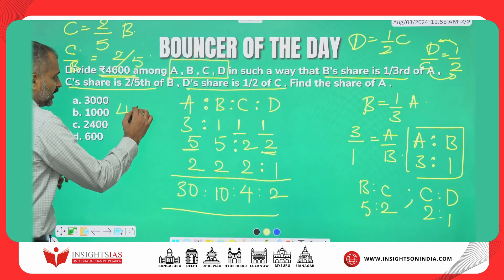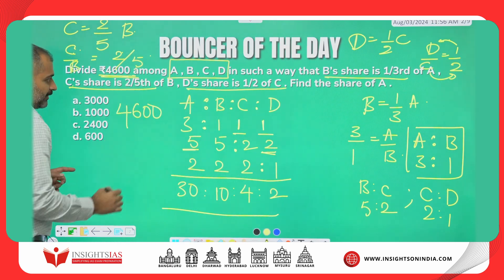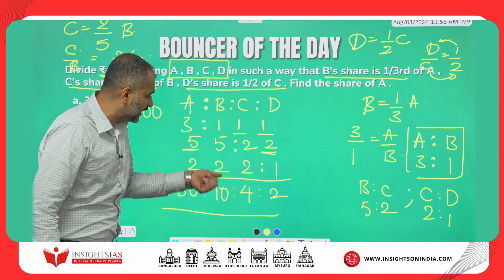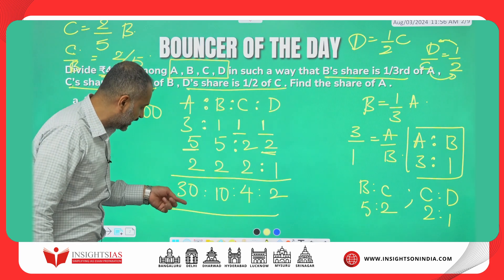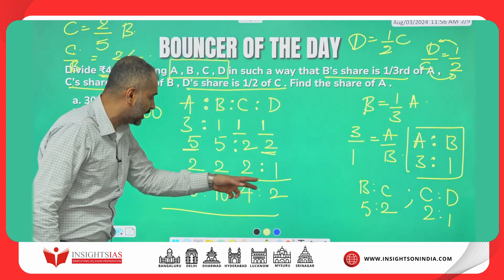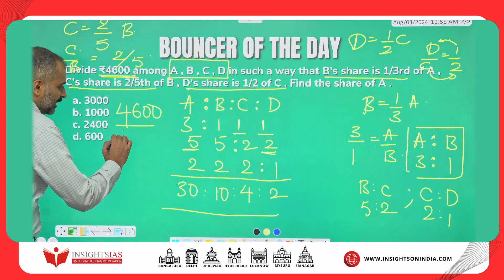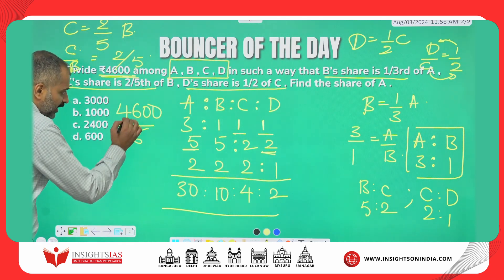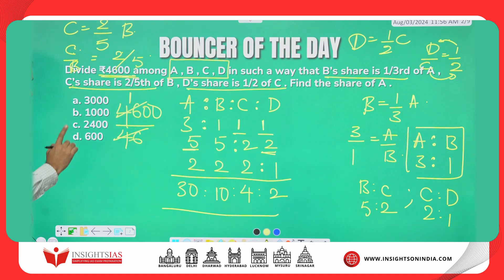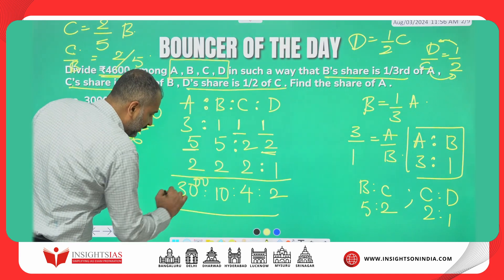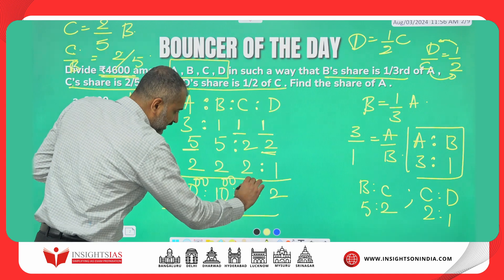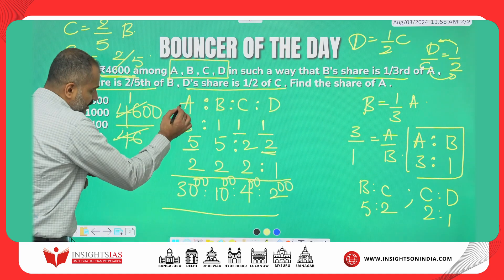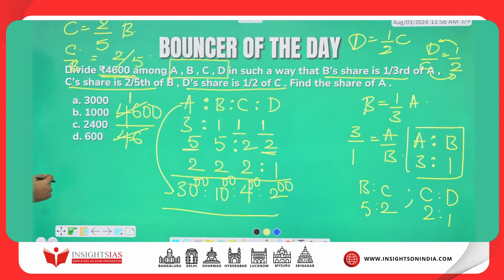The given money is 4600. A gets 30 parts, B gets 10 parts, C gets 4 parts, and D gets 2 parts — totally 30 plus 10 is 40, plus 4 is 44, plus 2 is 46. If I divide the given amount into 46 parts, 1 part is 100. So 30 parts are 3000, 10 parts are 1000, this is 400 and 200. The share of A is 3000 — option A.